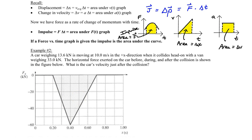There are some interesting graphical questions one could ask that weren't explicitly part of the initial problem. For example, what is the maximum magnitude of the force exerted on the car? Looking at the graph, that would occur at negative 60 kilonewtons.